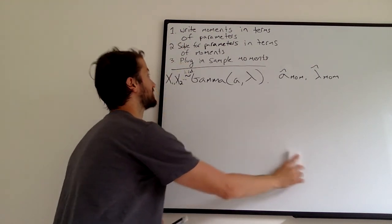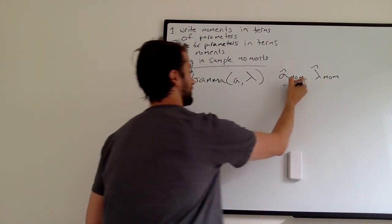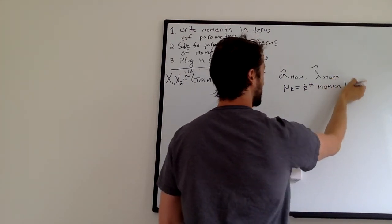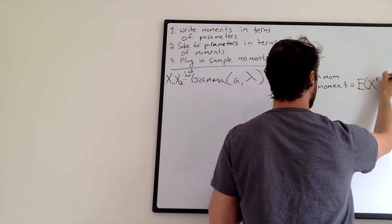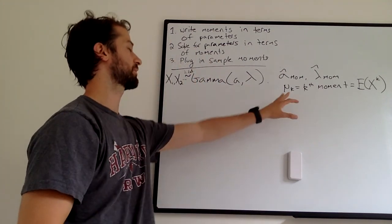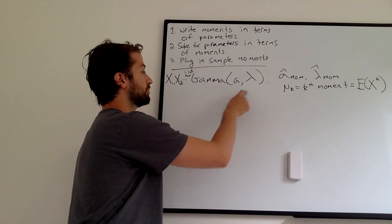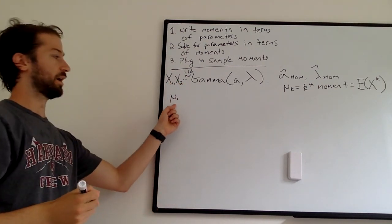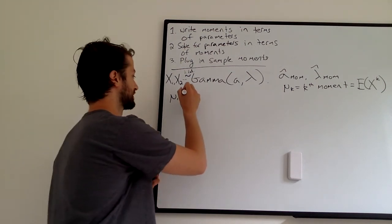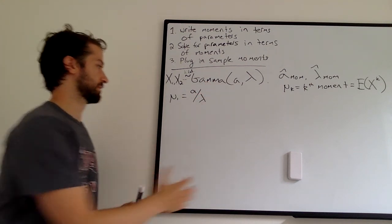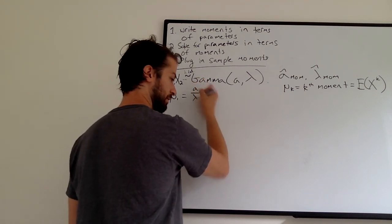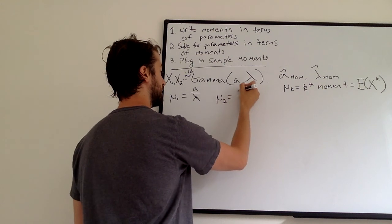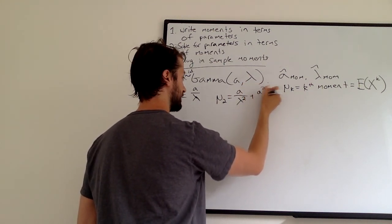Let's follow these three steps. The first step is to write our moments in terms of our parameters. We're going to use mu sub k as the k-th moment, which equals the expected value of the distribution to the k. Here we have two parameters, so we're going to need two moments since we'll do a system of equations. Our first moment, mu1, is the mean, and the mean of a gamma is just A over lambda. And mu2 is A over lambda squared plus A squared over lambda squared.